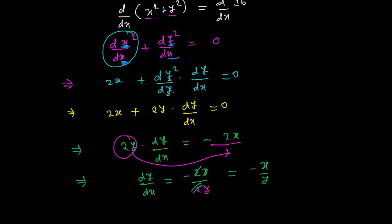Then just proceed and collect all the dy/dx terms onto one side. If there are multiple dy/dx terms in the equation, collect them all on one side, take common factor, and move everything else to the other side — then you will get your answer.